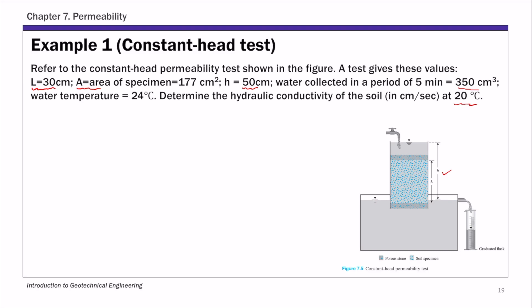We're going to determine the hydraulic conductivity of the soil at 20 degrees C. First, we're going to calculate K at the testing temperature, which is 24 degrees C. We know the water collected in 5 minutes — that's our capital Q, the total volume of water — which equals the time rate small q, the flow rate, times T. By Darcy's law, this equals hydraulic conductivity K times hydraulic gradient I times cross-sectional area times T. The hydraulic gradient I is head loss over the corresponding distance L, so H over L.